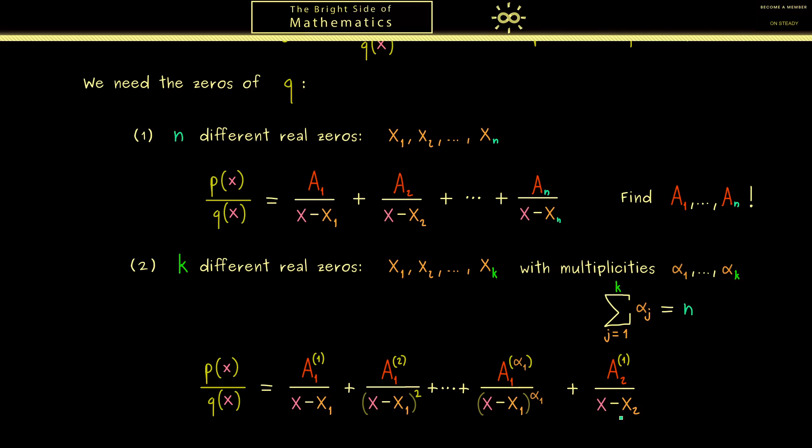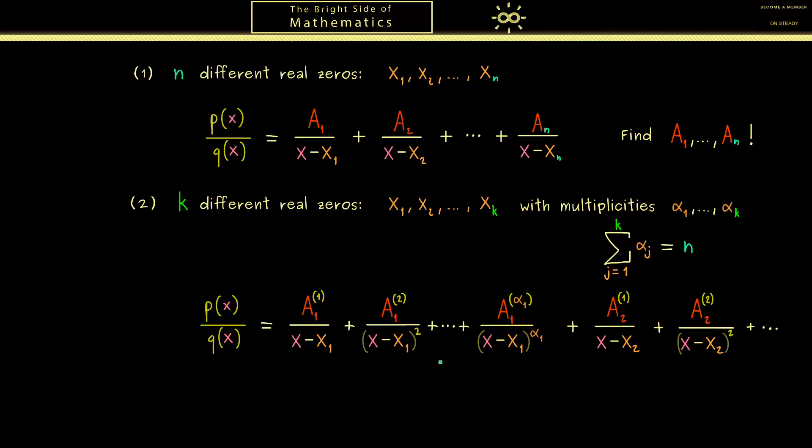Therefore the next one would be x₂ with exactly α₂ terms. So here I think you now know how the general formula should look like. In addition the example we will do will explain the formula even better.